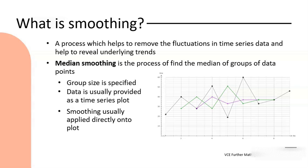Firstly, just a recap - what is smoothing? Smoothing is a special process that we apply to time series data to help us reveal any underlying trends. Sometimes our time series data is quite jagged, quite zigzaggy, has lots of fluctuations, and so smoothing is a process of helping to take out those fluctuations and smooth out the data in order to see if there is a trend occurring underneath.